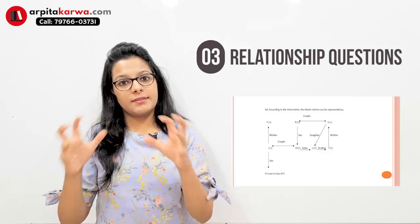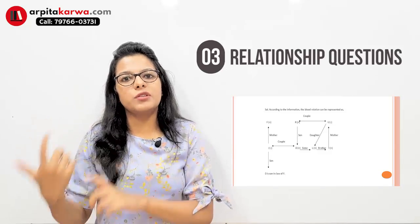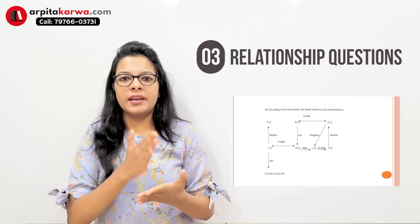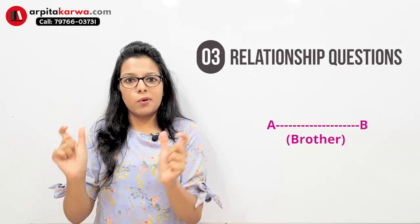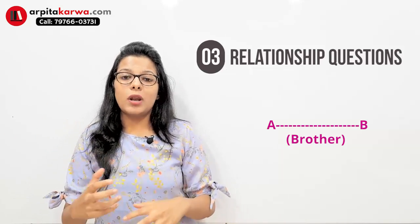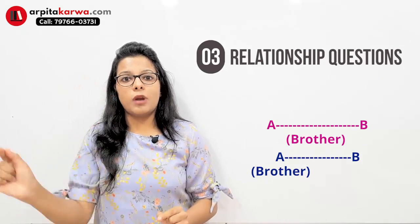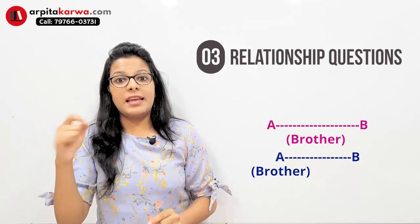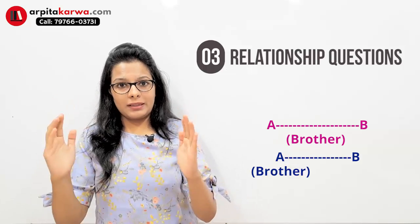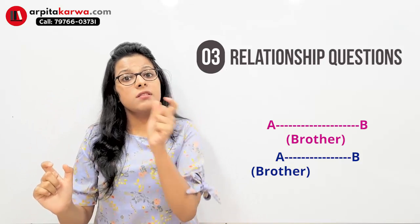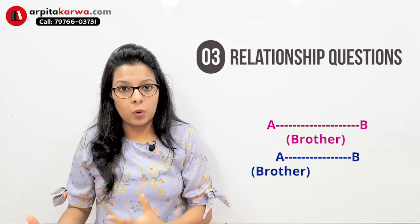Make a family tree and write down each character and what relation they have with the other characters. For example, if A and B are brothers, draw a line between A and B and write 'brothers.' But be careful — if the question says A is the brother of B, it implies B could be female. 'A and B are brothers' means both are male, but 'A is the brother of B' means B could be A's sister. Take care of these little distinctions.